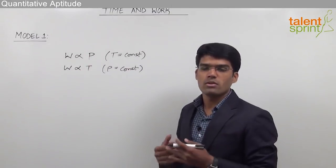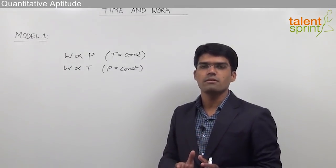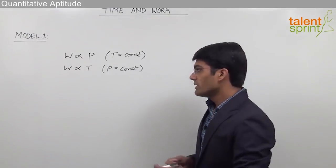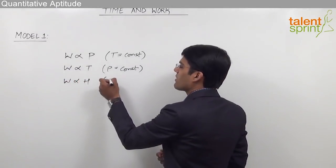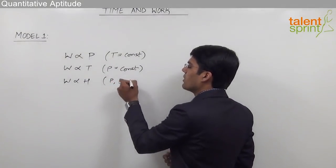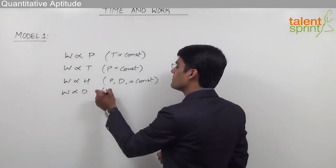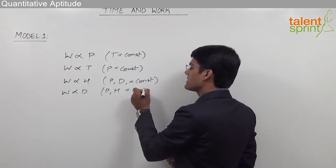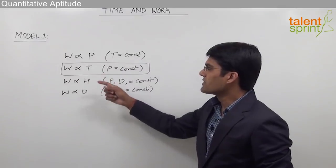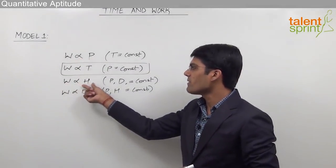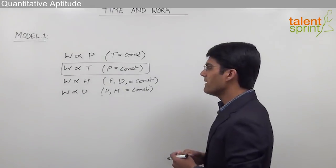Since time can be classified into number of days and number of hours per day, we can say work is proportional to number of hours per day when number of persons and number of days are constant. Similarly, work is proportional to number of days when number of persons and number of hours per day are constant.